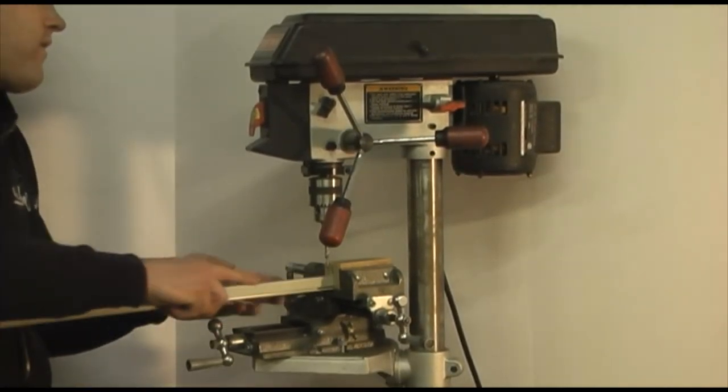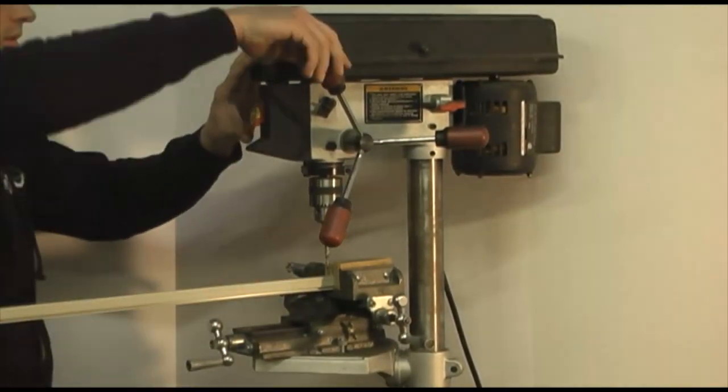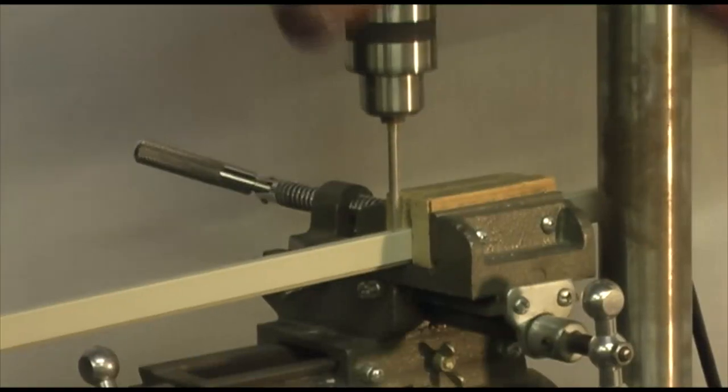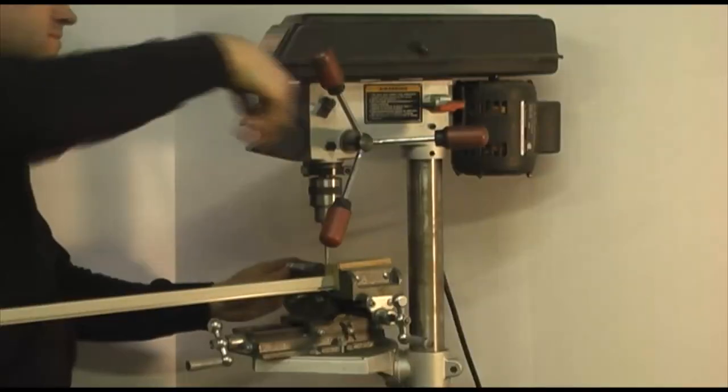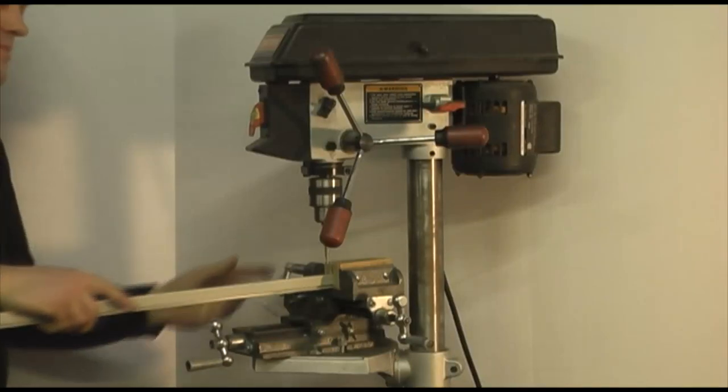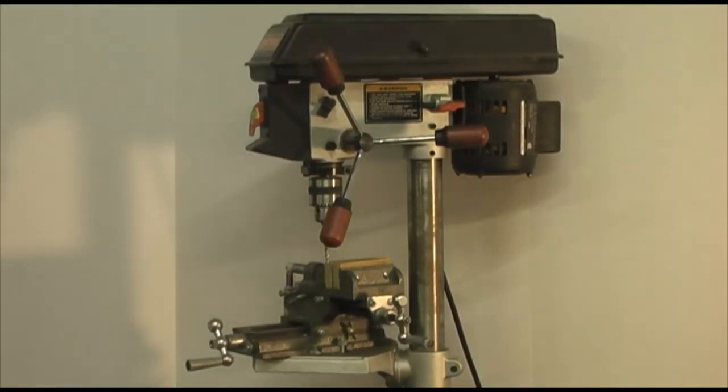Using a hand drill or a drill press, drill from the outside of the screen towards the inside. This will make a larger hole on the outside and a smaller hole on the spline side.